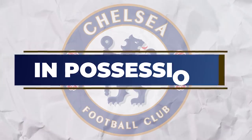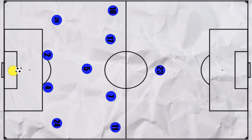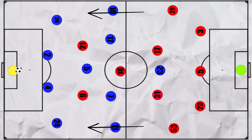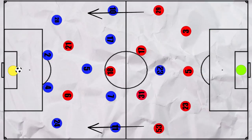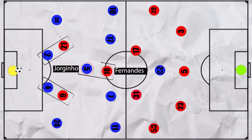Let's start with how Chelsea looked to attack. Chelsea tried to play out from the back in their 4-3-3. However, United often pressed high, even off goal kicks, with the front two marking each of Chelsea's centre backs, whilst Bruno Fernandes was tasked with sitting on Jorginho to limit his impact.